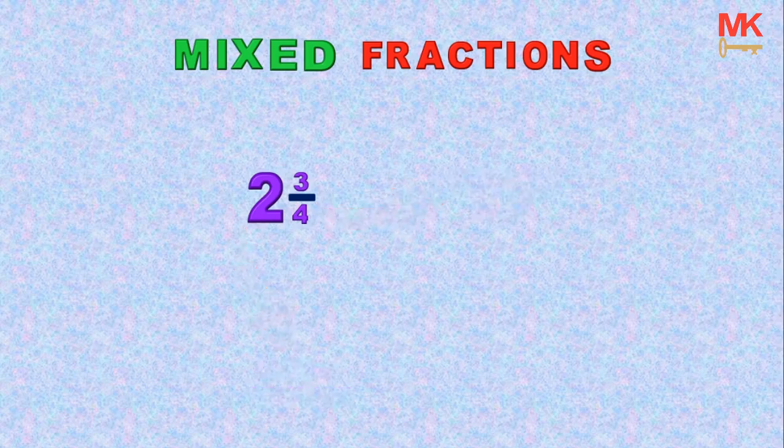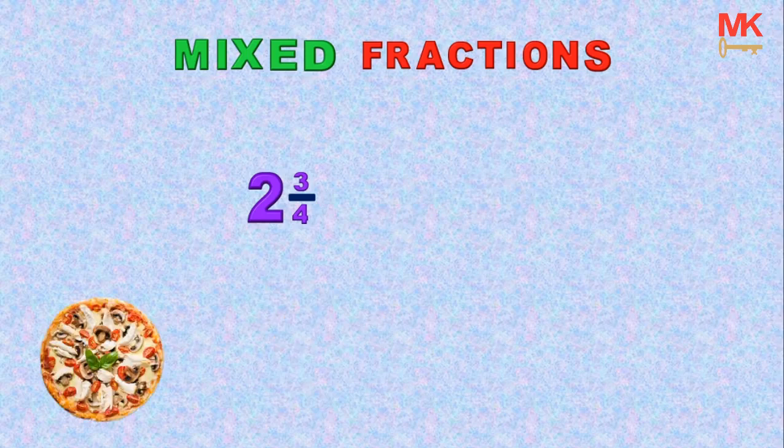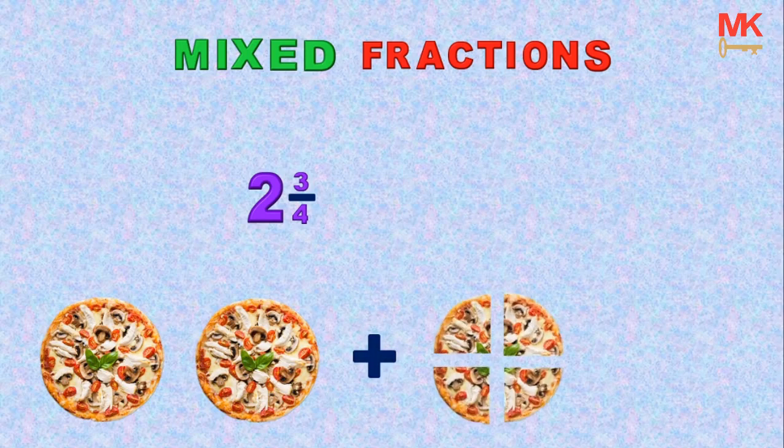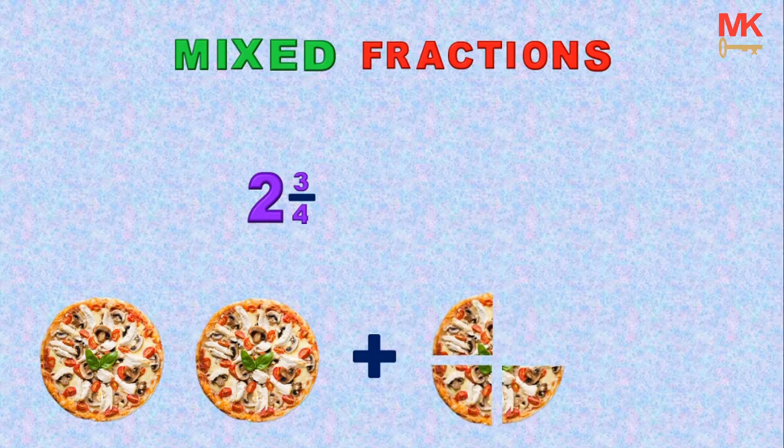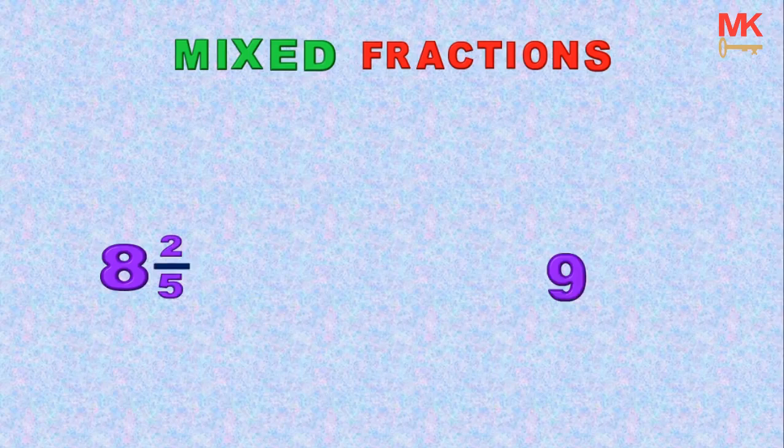Again, if we wish to represent this fraction with our pizza, it means we are just going to have the following. That means 2 whole pizzas plus 3 out of 4 of a whole pizza that is divided into 4 equal places. Other examples of mixed fractions are 8 whole number, 2 out of 5, 9 whole number, 4 out of 7.